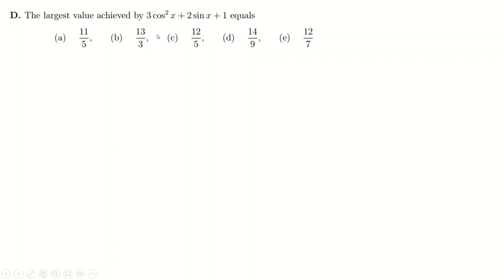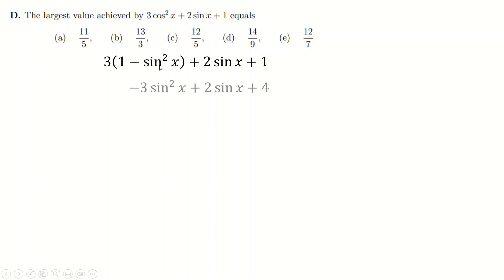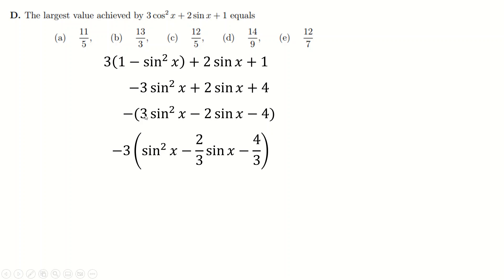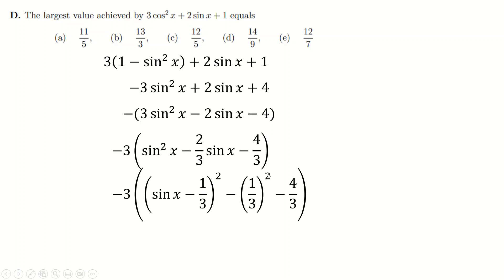Question D: as soon as you see this, you need it in one trig function, not two. Change the cos squared for one minus sine squared, then expand. It's looking for the largest value, so this is a quadratic — write it as minus 3y squared plus 2y plus 4. I factorized out the minus and then the 3, so I can complete the square more easily with a positive leading coefficient.